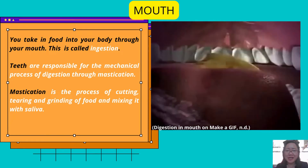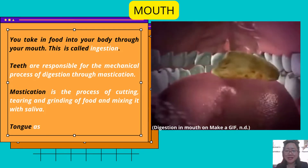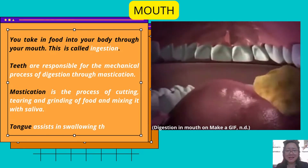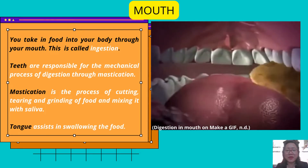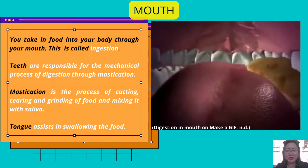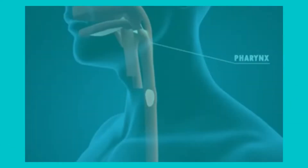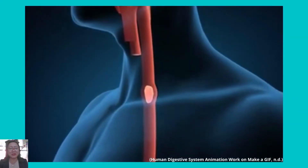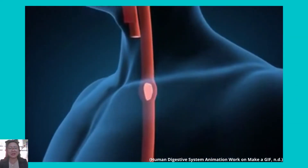Aside from the teeth, you can see the tongue, and the tongue assists in swallowing the food that you eat. From the mouth, the food moves down to the pharynx, then to the esophagus through peristalsis.